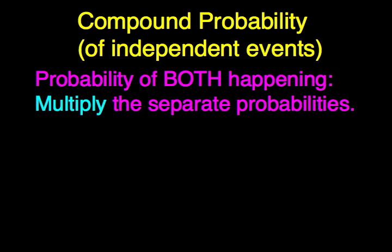So let's return to our example of flipping a coin. Well, in this case, let's flip a coin four times. Now here it says the probability of both happening. We're actually going to consider the probability of four events happening. What would be the probability of getting four heads in a row? The probability of getting four heads. We've said before we're going to multiply the separate probabilities.